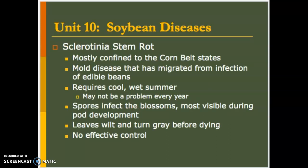Moving on to things more common in this area: sclerotinia stem rot, very common for the Corn Belt states. It's a mold disease that migrated from edible beans and usually requires a cool, wet summer, so weather conditions may dictate whether you see this problem year to year. The spores infect the bean once it goes into bloom, during pod development is when it shows itself. Leaves will turn gray before dying and defoliating, and there's really not much effective control once this problem sets in.